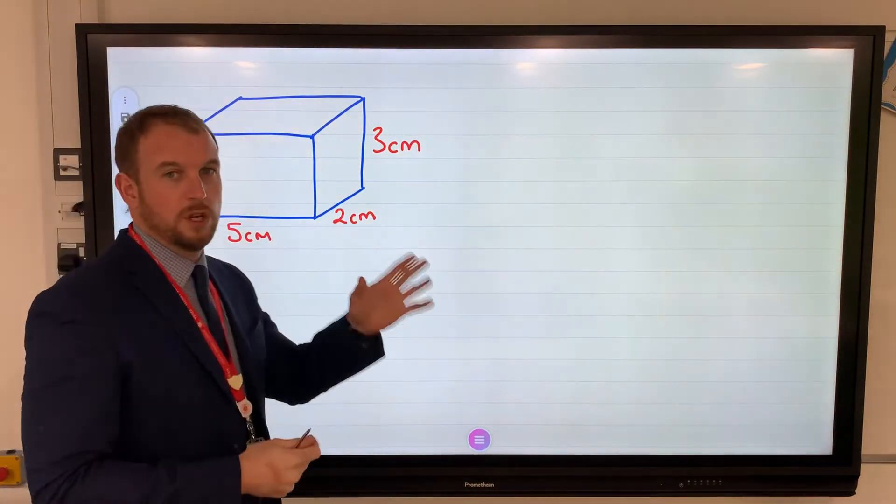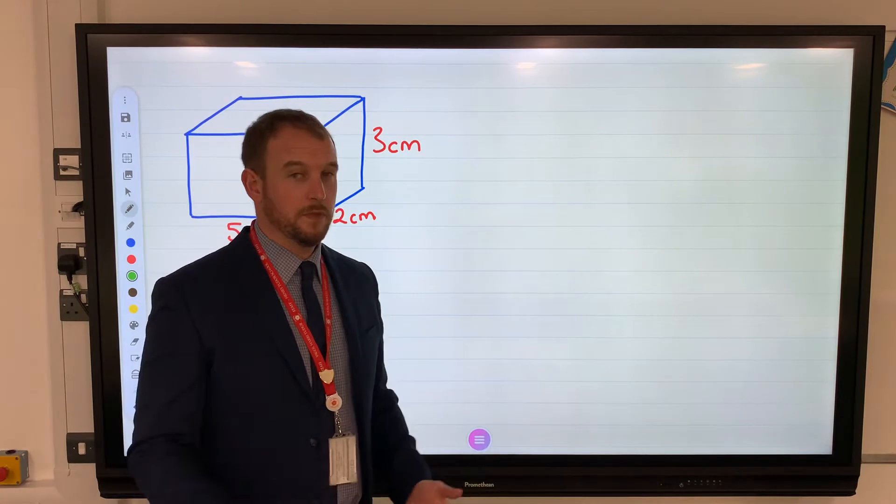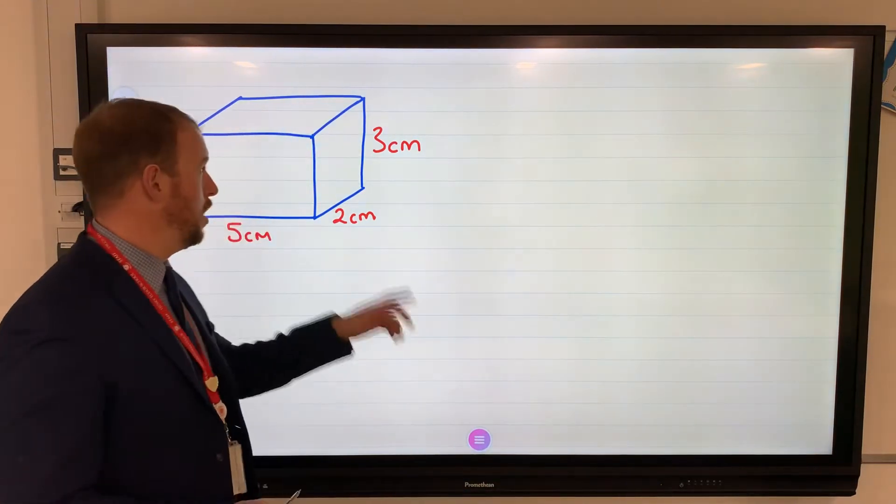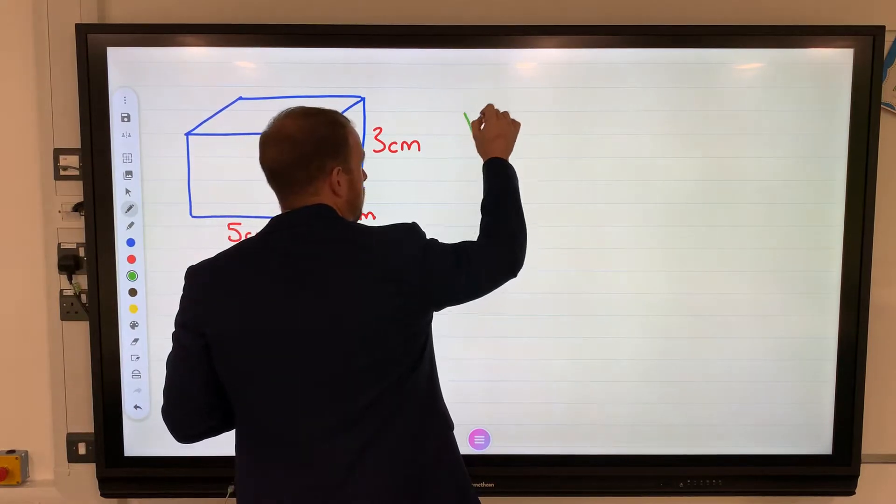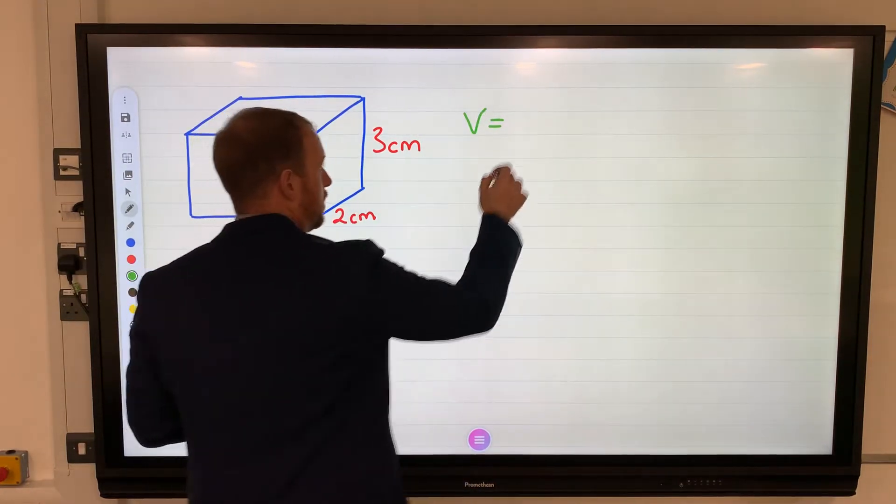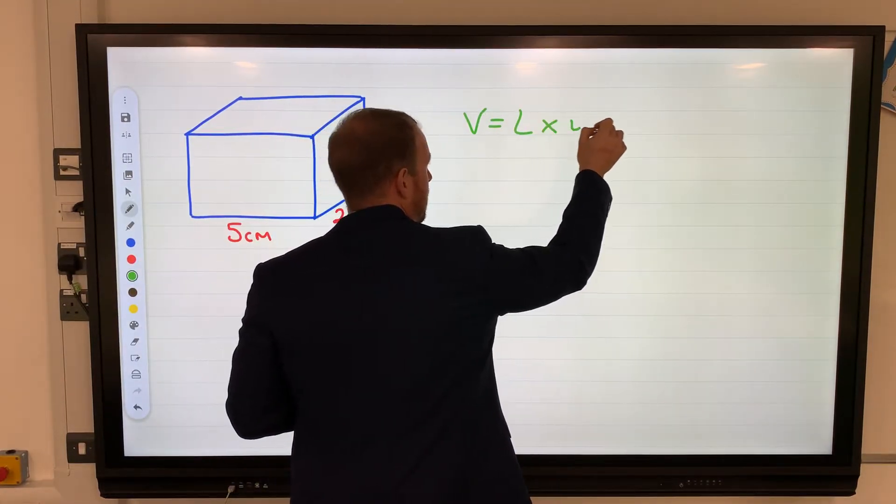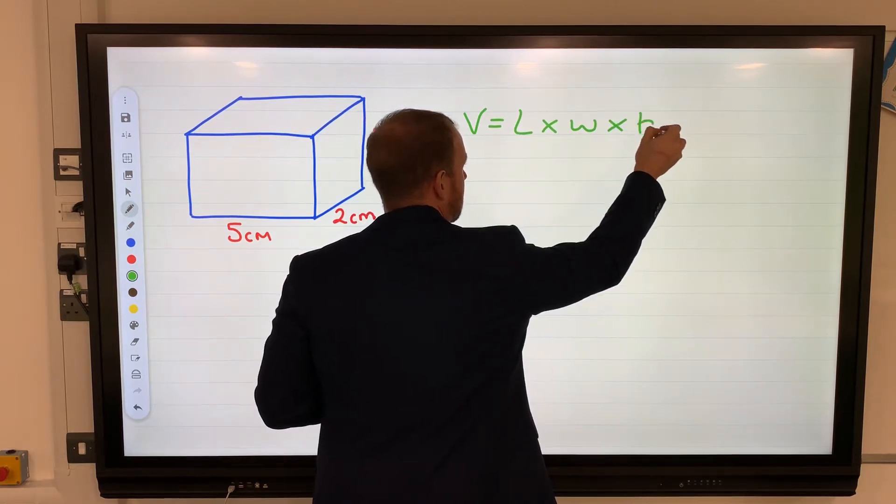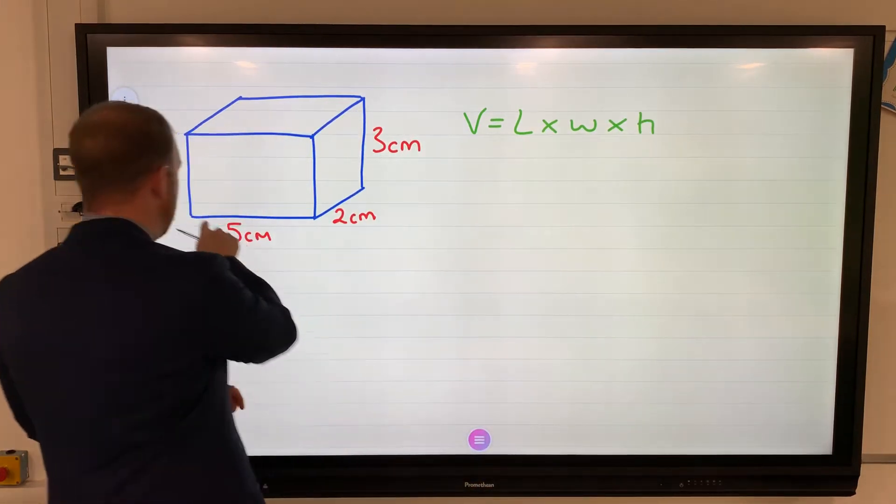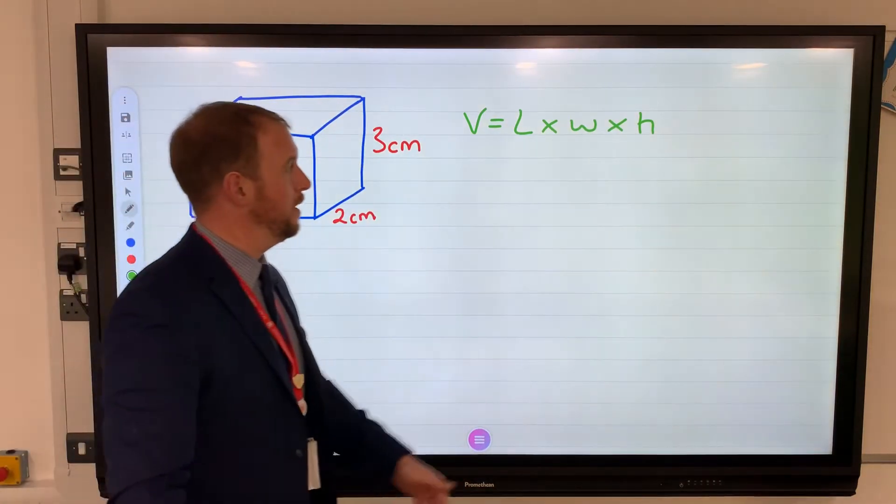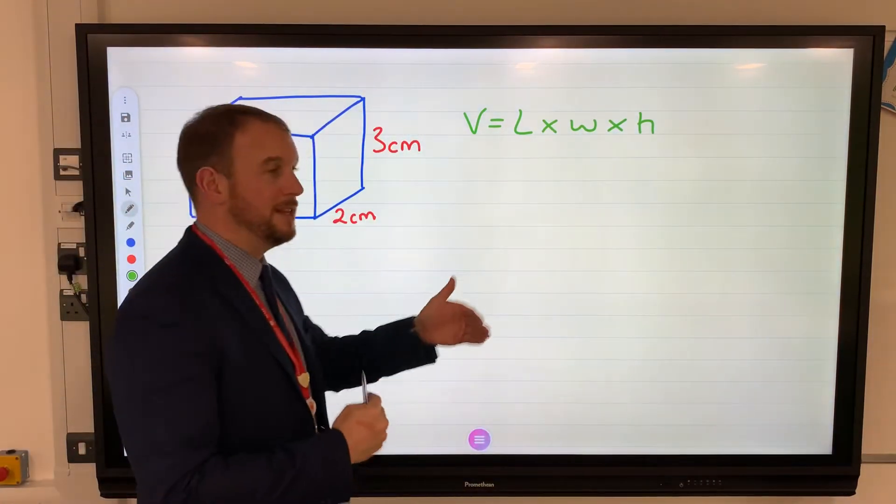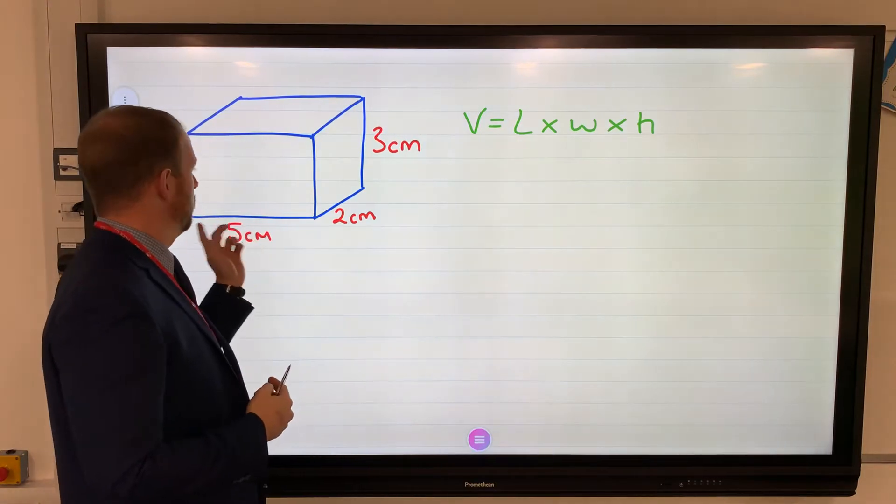We need to remember them, and I hear all the time, especially when it comes to cuboids, 'Oh sir, just times them all together.' It is right, but only with a cuboid. The formula would be volume equals length times width times height. Some people use the word depth instead of height, but for a volume of a cuboid I use height.